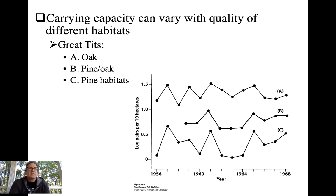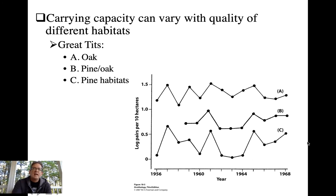Don't think about carrying capacity as being a characteristic of a species — it's a characteristic of how a species can interact with a very specific habitat. There may be different habitats that a species uses associated with different carrying capacities. In this study of great tits, curve A is associated with oak habitats, B is pine-oak habitats, and C is a pine-only habitat. Pine-only habitats just don't support very large numbers of individuals — resources are not there. The greater the density and diversity of oaks, the better your carrying capacity and the larger the population.